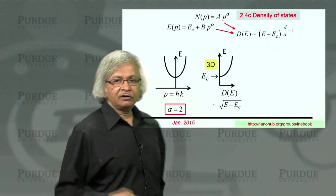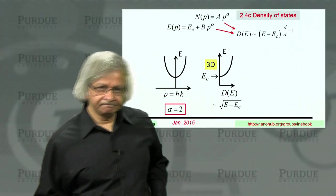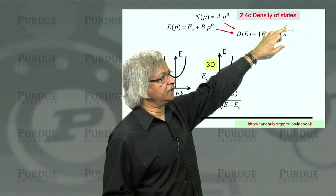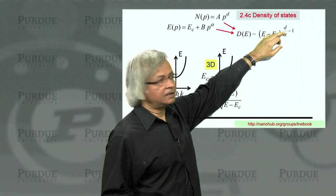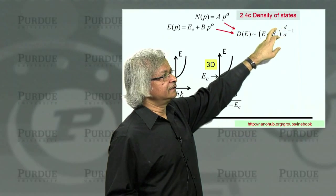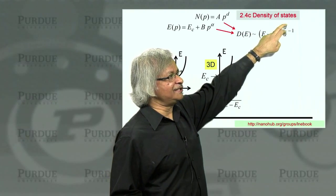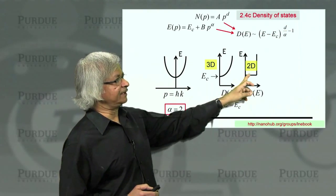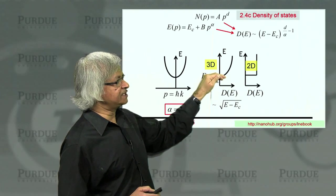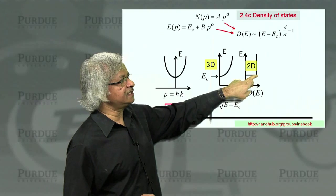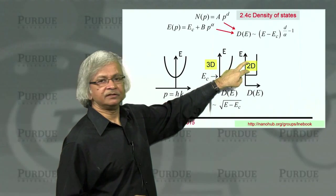The answer will change if we consider two dimensions. What do we get if we have two dimensions? Now it's 2 divided by 2, which is 1, minus 1, that's 0. Which means D is like E minus Ec to the power 0, it's like a constant. When you plot it, below Ec there is no state, so here it's 0. But once you cross Ec, it's a constant. That's this 2D result.